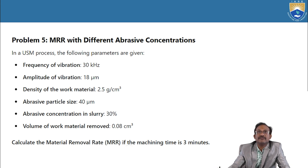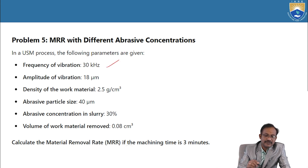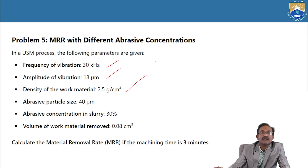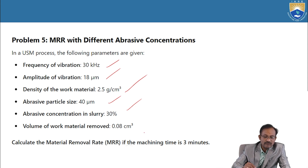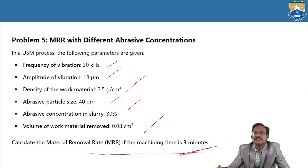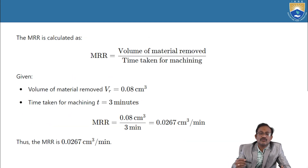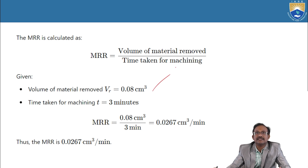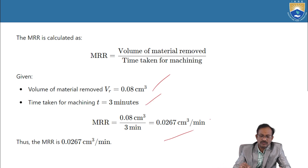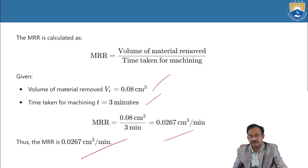Problem 5: Material Removal Rate with different abrasive concentrations. In ultrasonic machining, the following parameters are given: frequency, amplitude of vibration, density of work material, abrasive particle size, abrasive concentration in slurry (in percentage), and volume of work material removed. Calculate the MRR if the machining time is 3 minutes. Using MRR = volume removed ÷ time, the result is 0.0267 cm³/min.